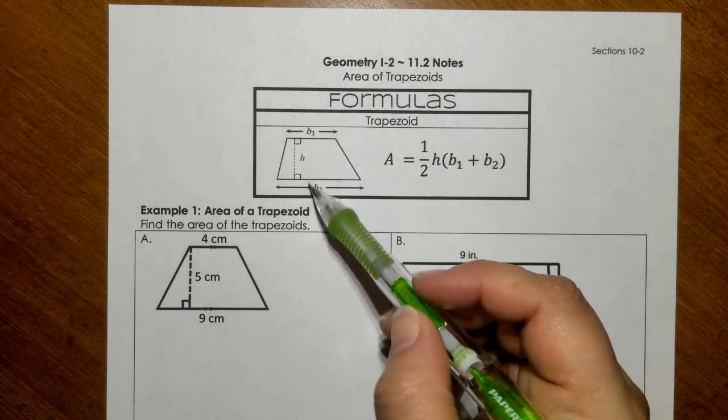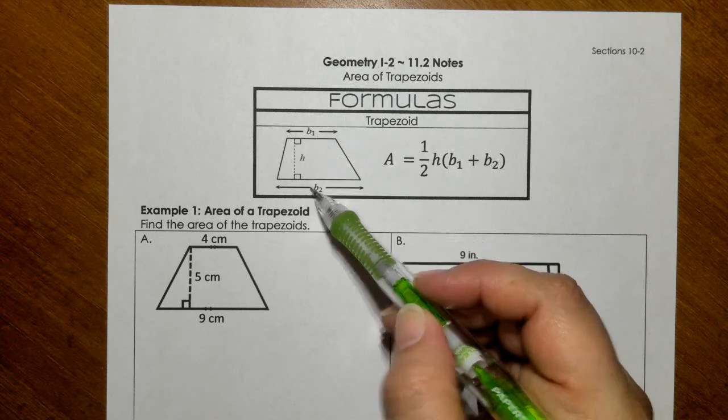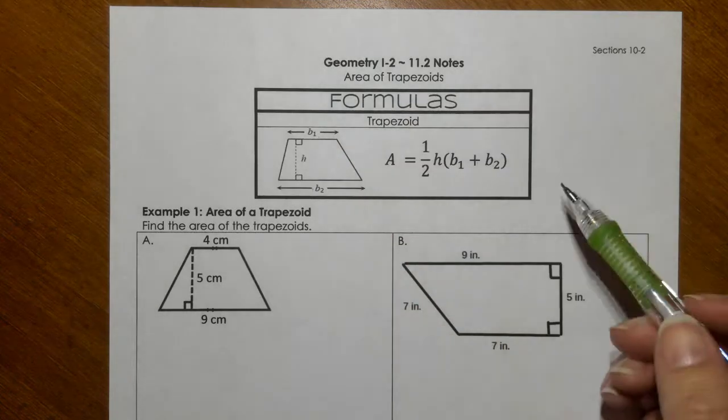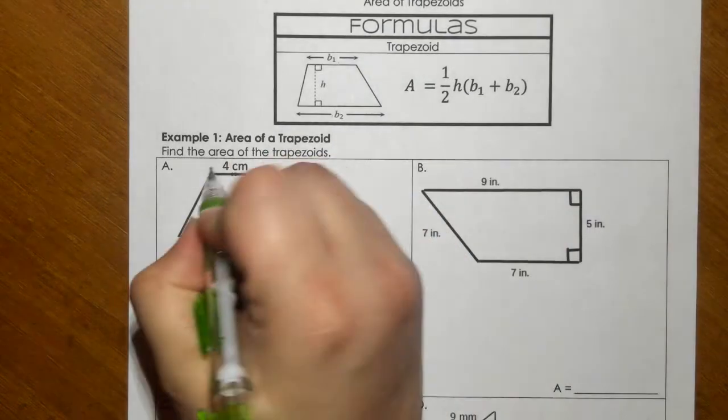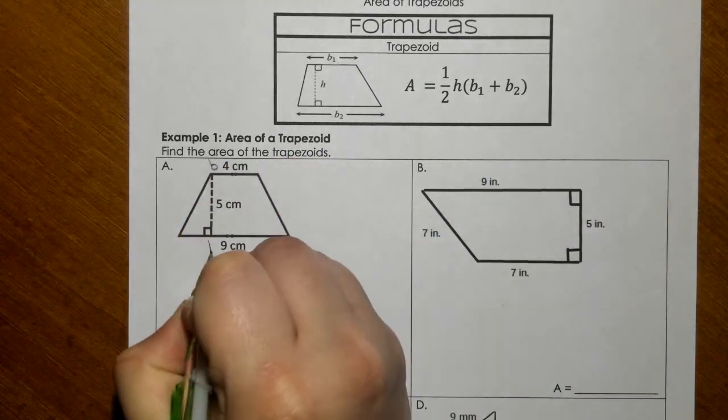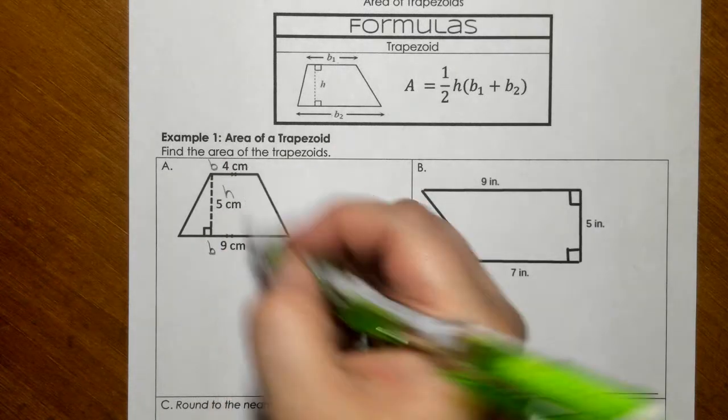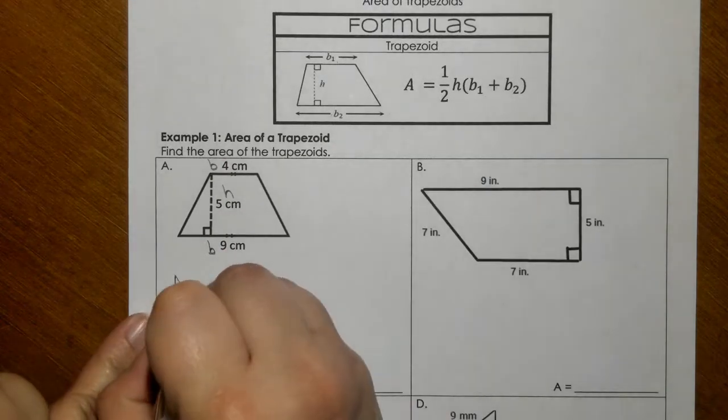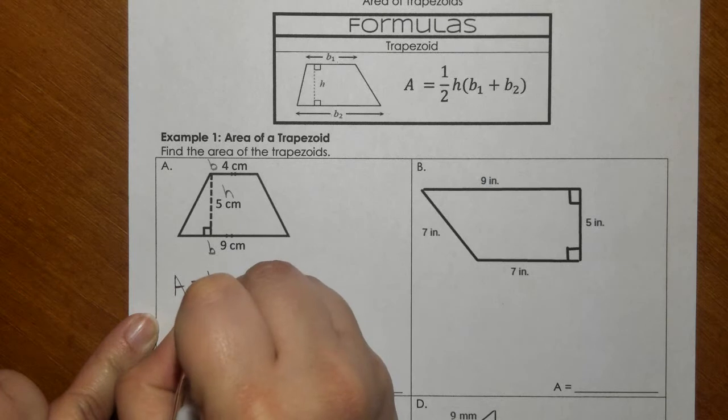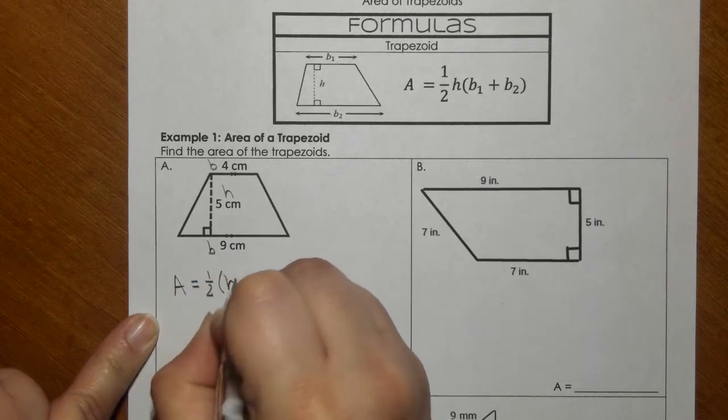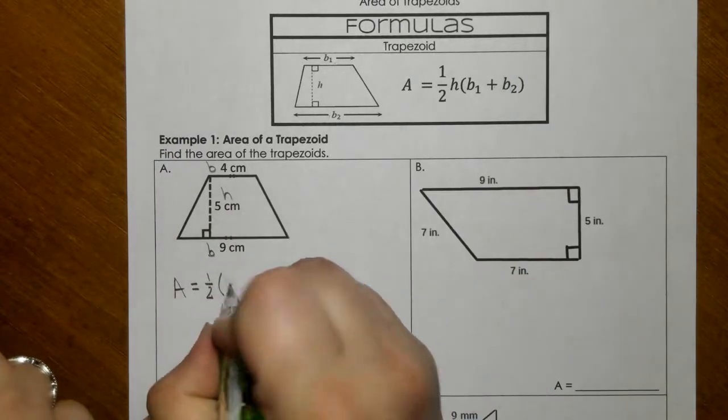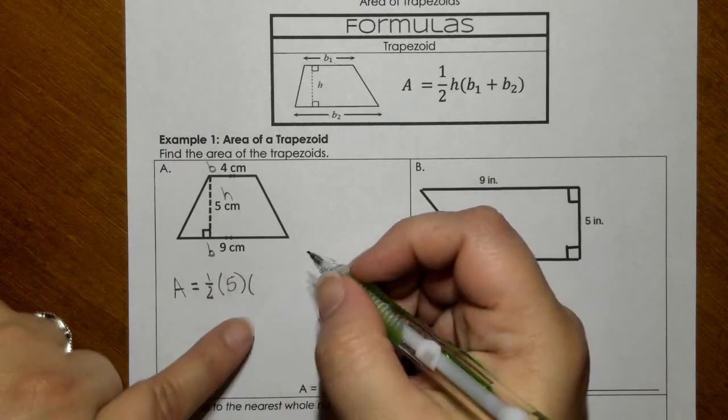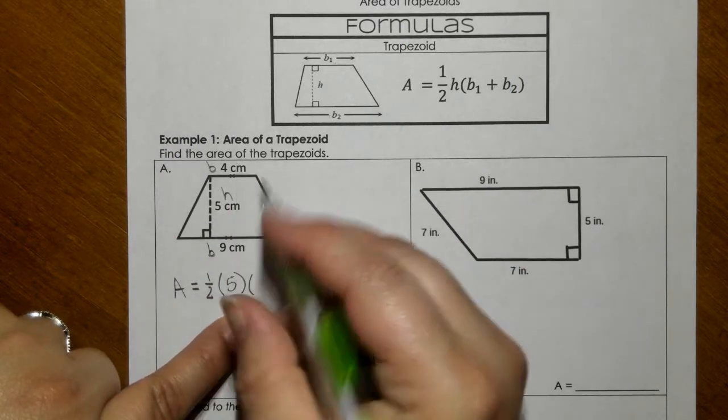It doesn't really matter how you add them. You can add the top plus the bottom or the bottom plus the top. It's going to be the same thing. So for the first problem here, identify this as my bases and my height is between the bases. So I would have area equals one-half times the height, which is 5, plus the bases added together, so 4 plus 9.